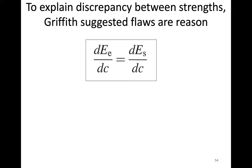To explain the discrepancies between strengths, a scientist named Griffith suggested that flaws are the reason. He came up with an energy balance involving two things. On the left side, you can see the lowercase E_e, which represents elastic energy. There is stored elastic energy in the material when you subject it to force, and we can express that as E_e = πσ²c²/E using the elastic modulus E, crack size c, stress σ, and π.